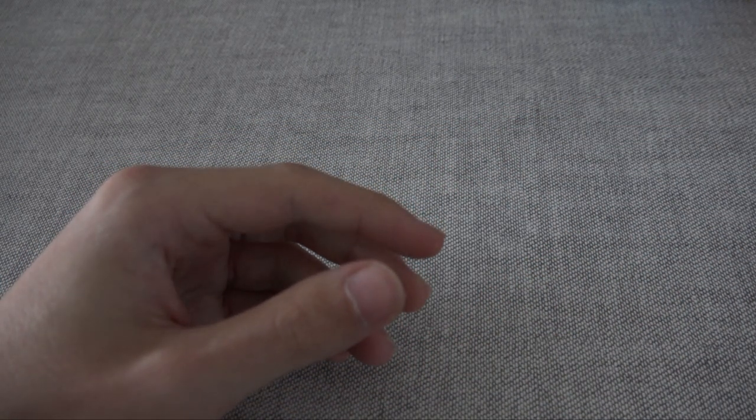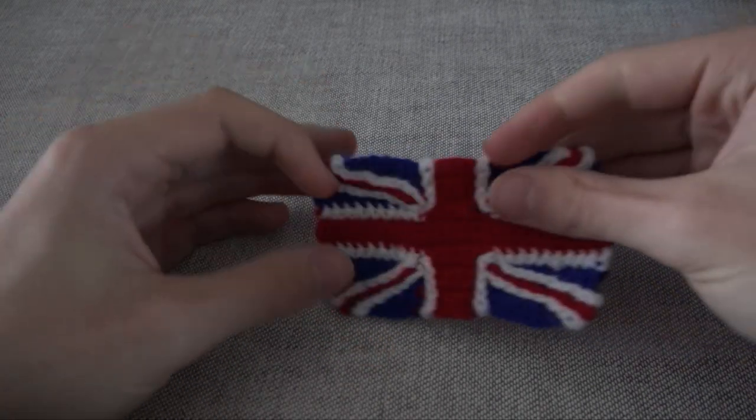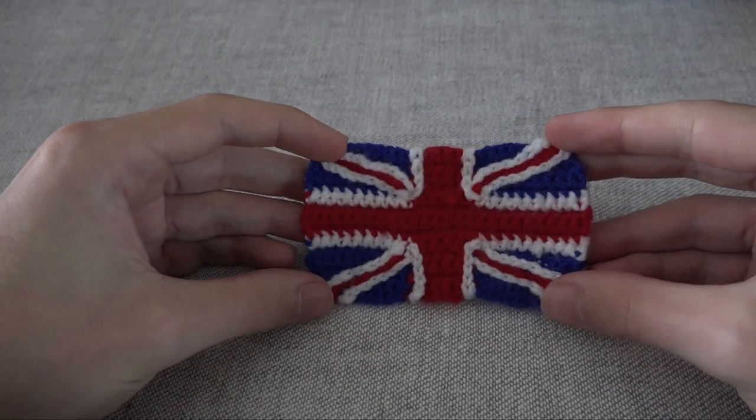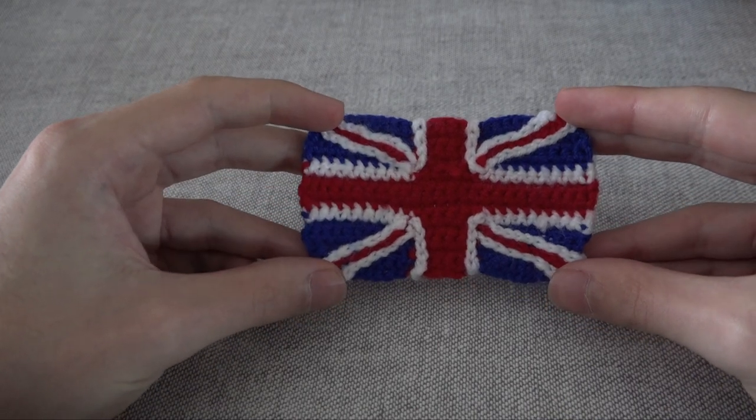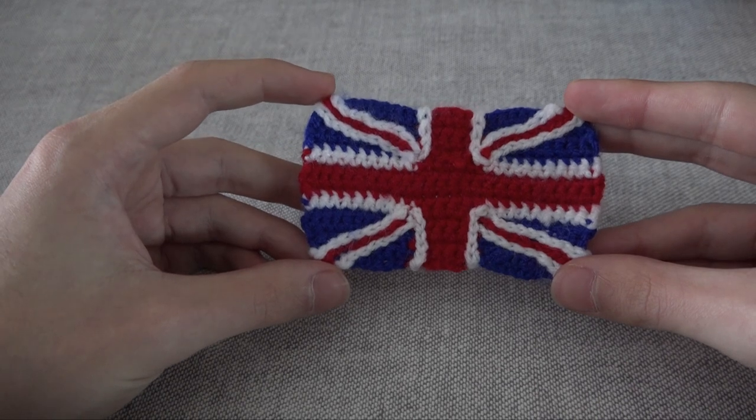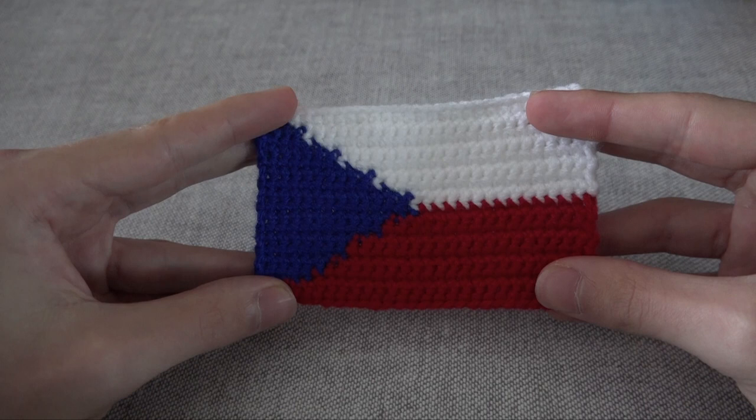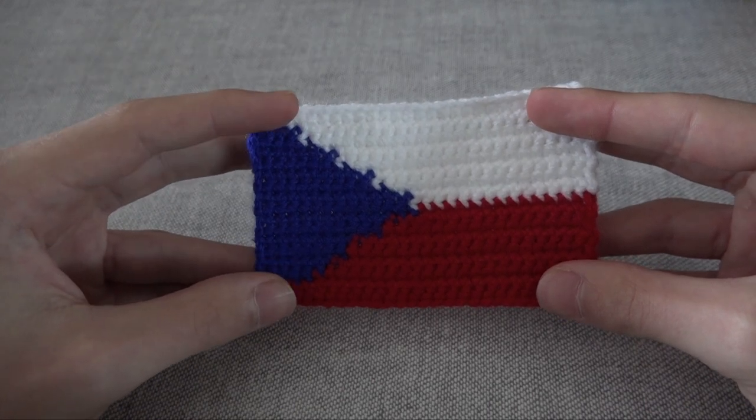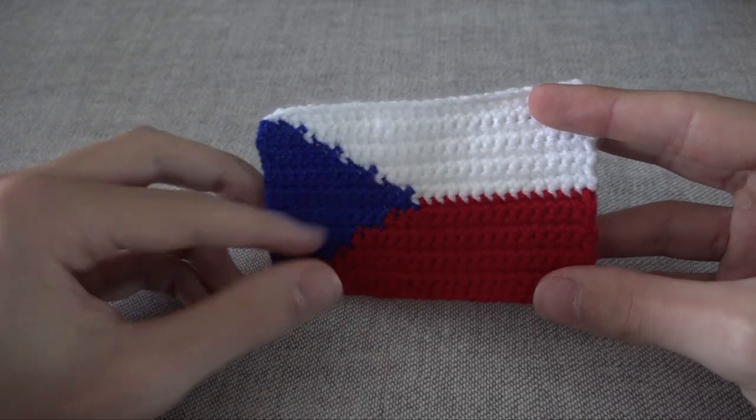Last time, we finished with my flag obsession and I continued that in August. First of all, I made the flag of the UK, the Union Jack or the Union flag. I don't really know the difference, but I think it turned out pretty okay. Next up, I made the flag of Czechia, which was really fun to work out how to do this triangle.